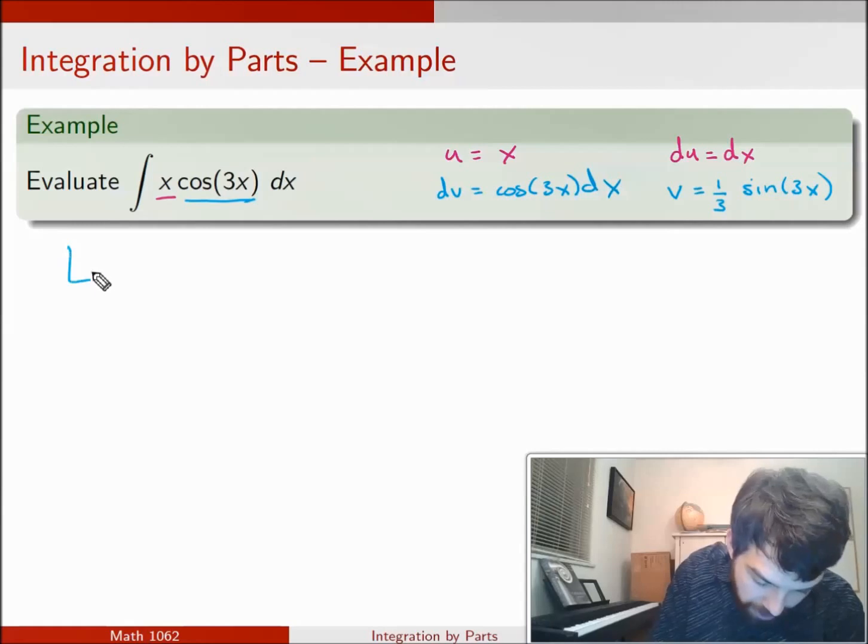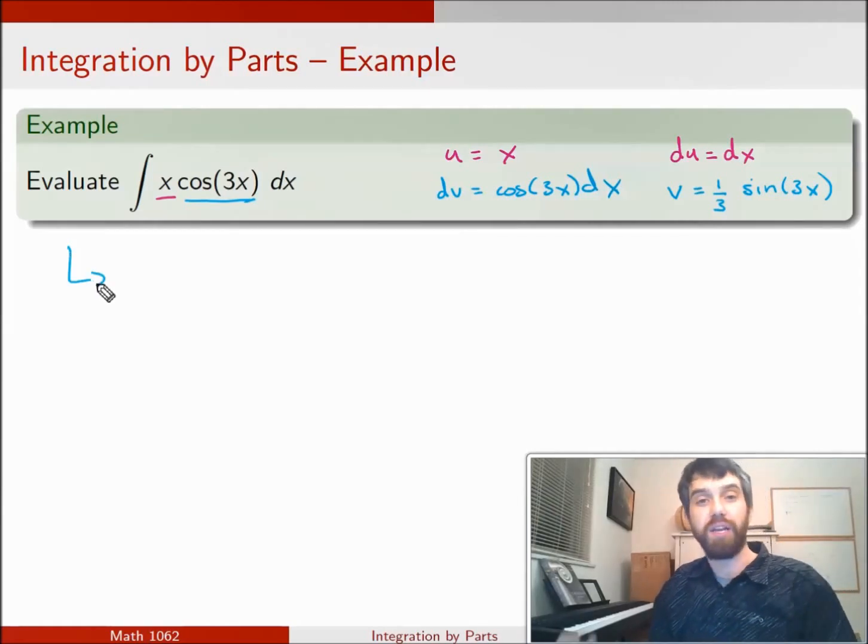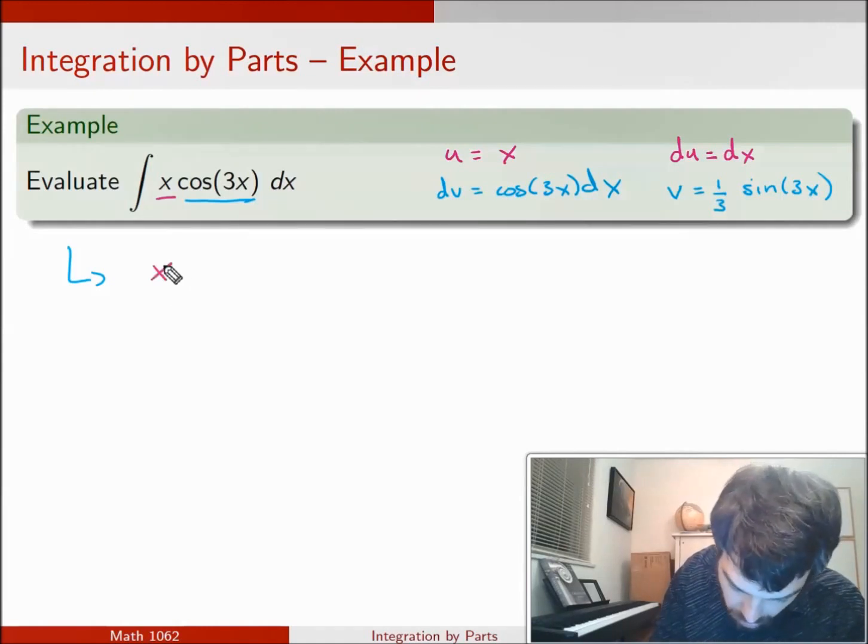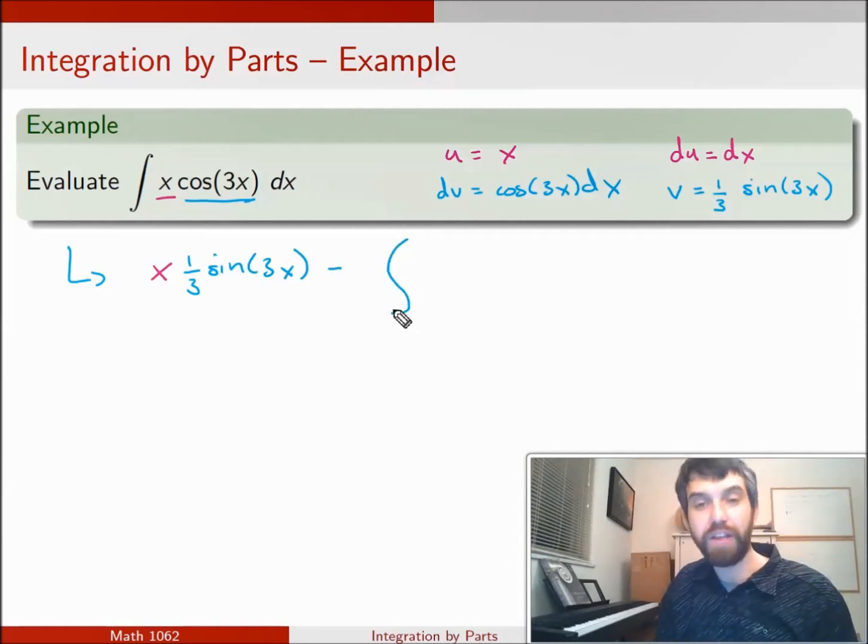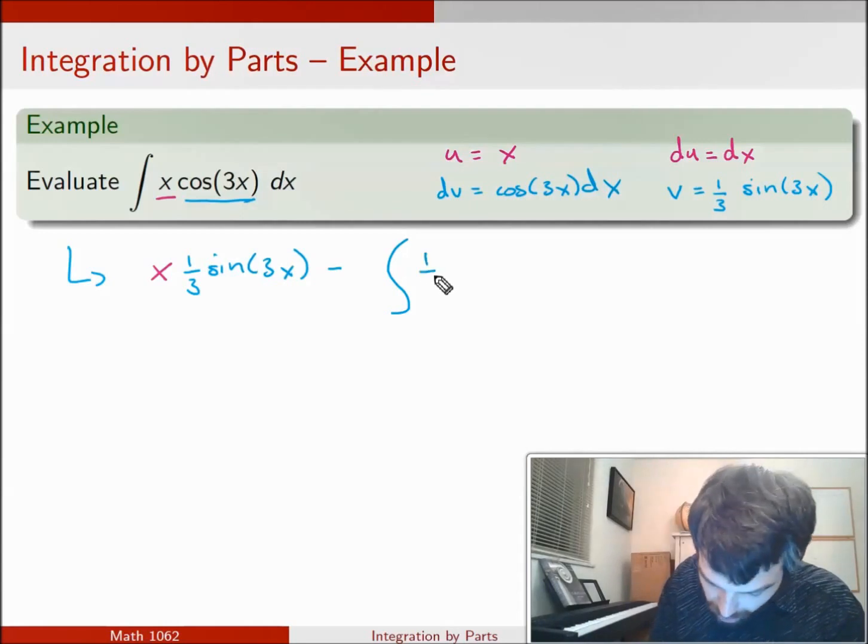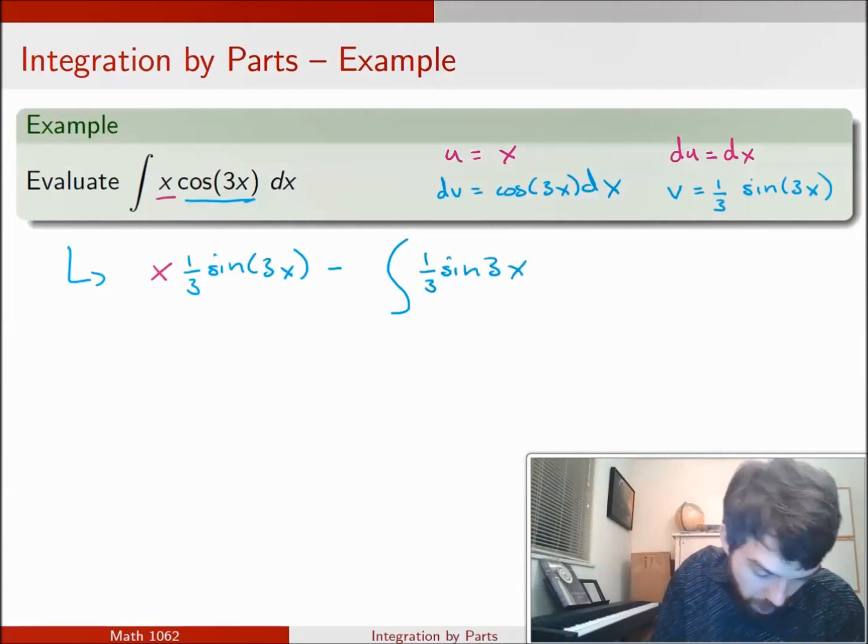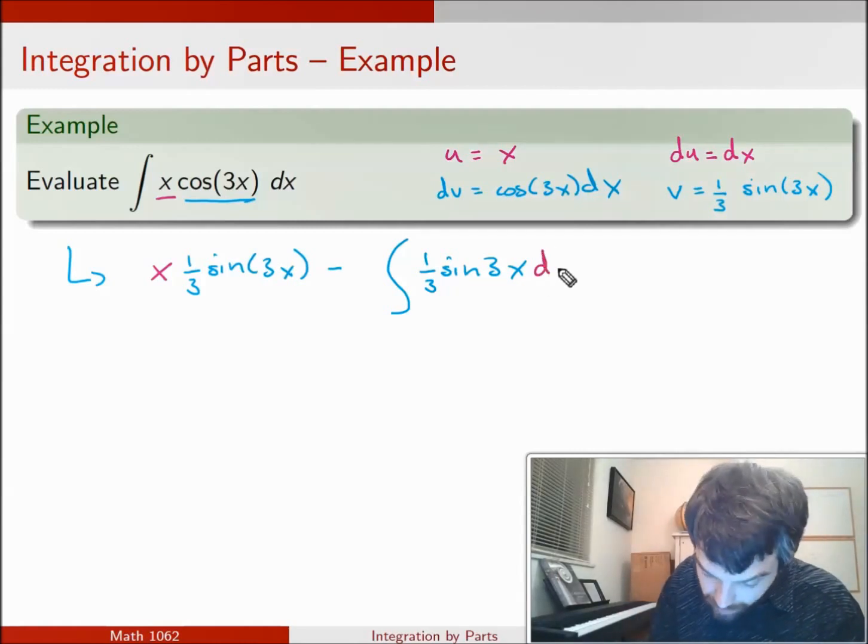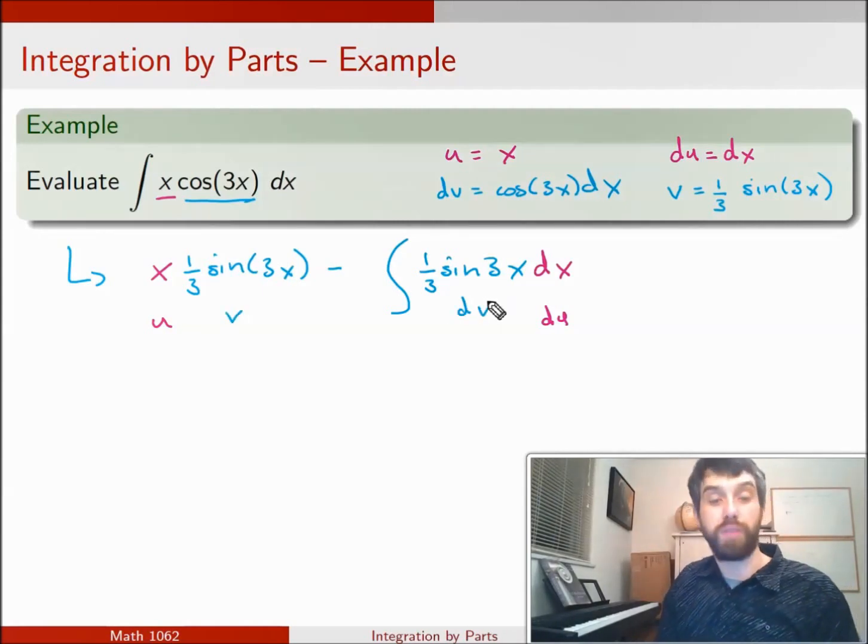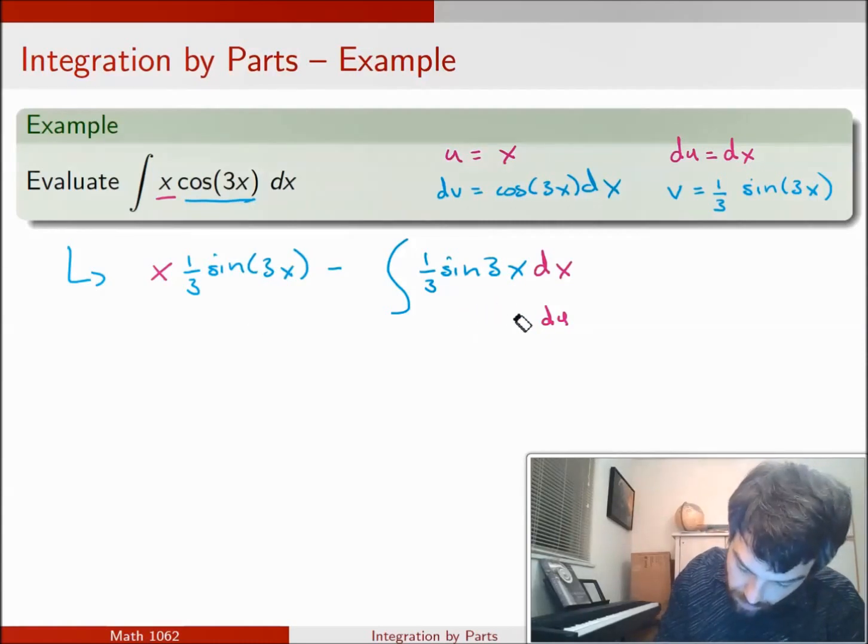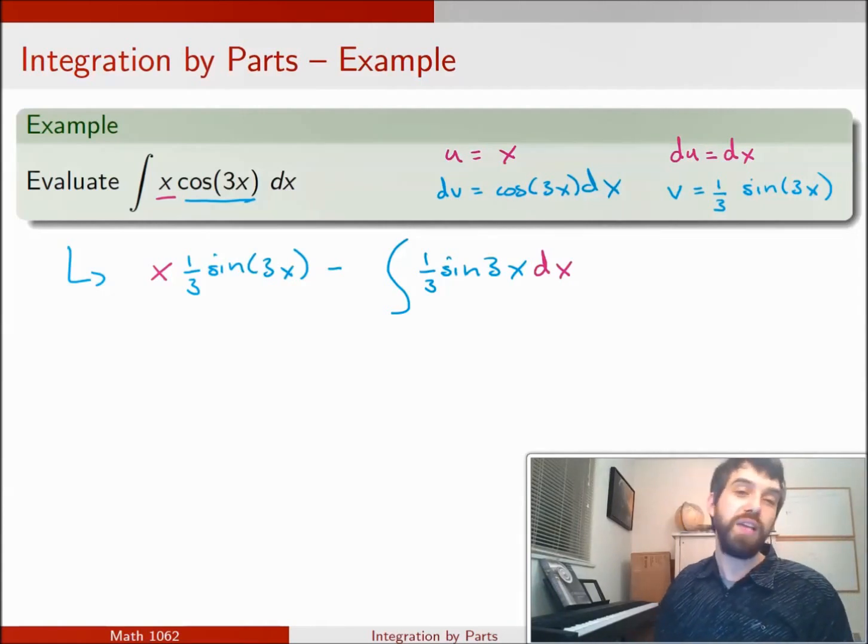Now let's apply the integration by parts. We know our formula is going to be uv minus v du. First up, we want to have our u multiplied by our v, so that's u multiplied by 1/3 sine of 3x. Then I'm going to subtract off the integral of v du, so the integral of 1/3 sine of 3x all multiplied by dx. This represents our uv minus v du.